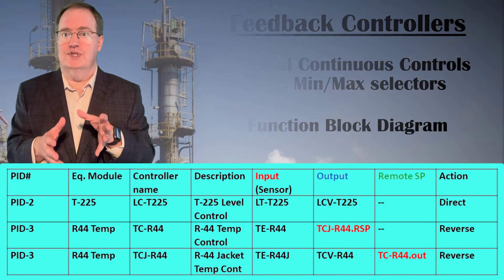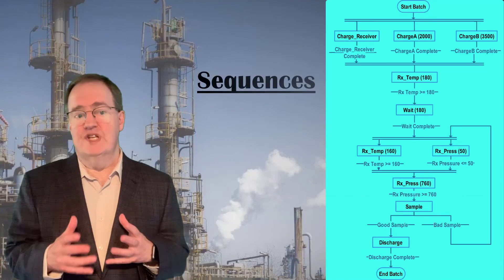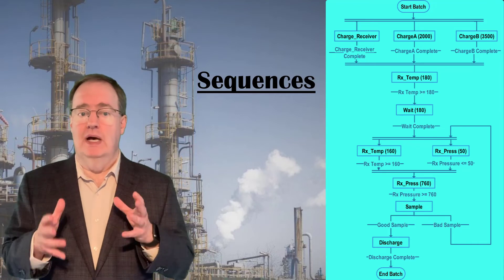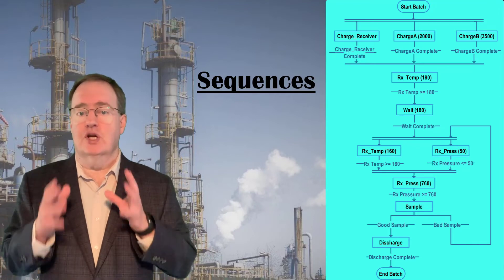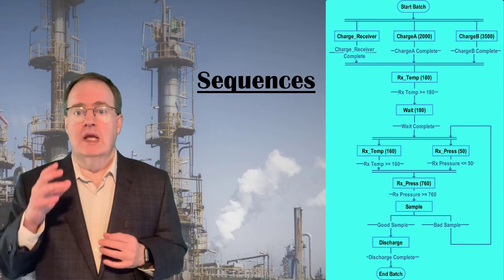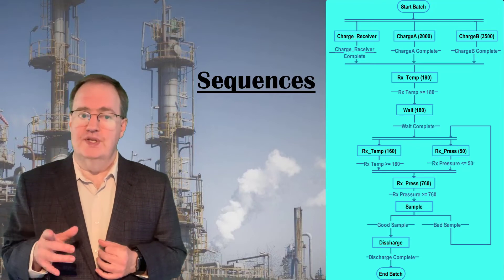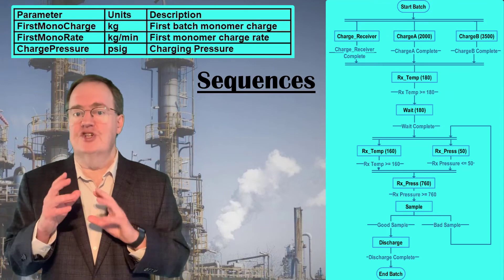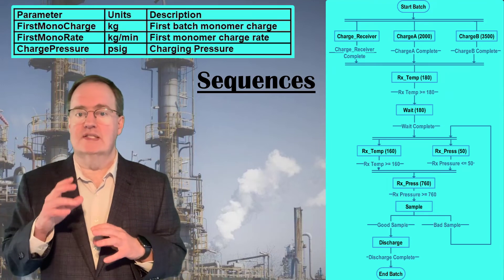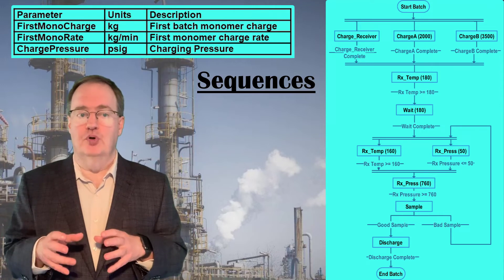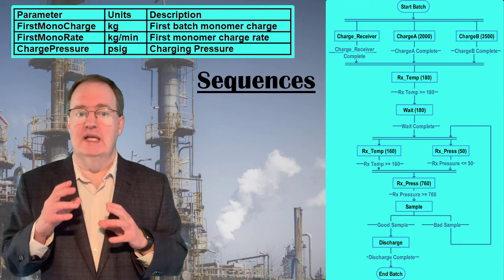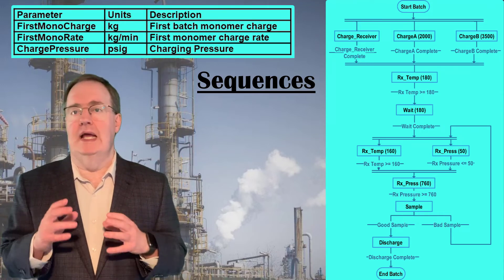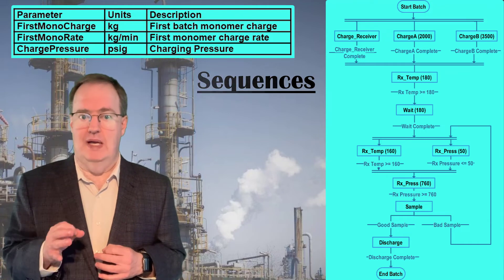For sequences — both recipes and phases — use sequential function charts. This is always the clearest means of communicating sequential logic. For each sequence, list any input or output parameters in an accompanying table, and give description and engineering units for every parameter.